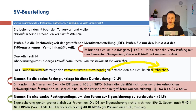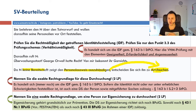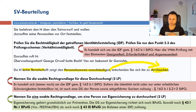Jetzt kommt eine weitere Fallfrage – grün, weil es um Prävention geht. Die bisherigen zwei Fragen betrafen die Repression. Die Fallfrage: Nennen Sie eine exakte Rechtsgrundlage, um eine Person zur Eigensicherung zu durchsuchen. Eigensicherung gehört zur Prävention, zur Gefahrenabwehr. In der StPO findet man keine Eigensicherungsdurchsuchung – ich schaue in das BPolG. In §43 BPolG gibt es zwei Eigensicherungsbefugnisse.